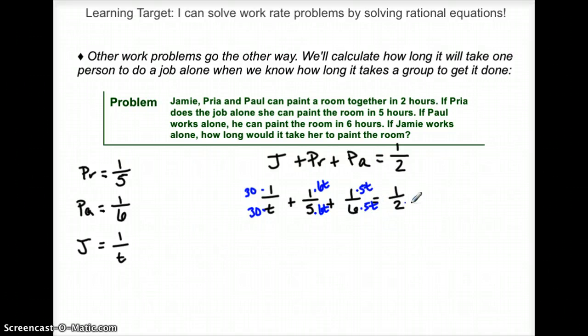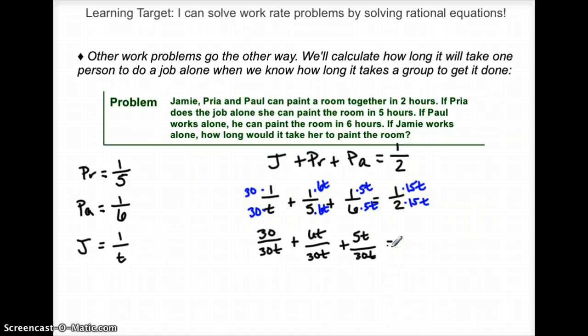And let's see. 2 times what? 2 times 15. But again, it needs the T as well. So hopefully you can see that all these are going to have 30T in the denominator, and we just need to fix the tops.